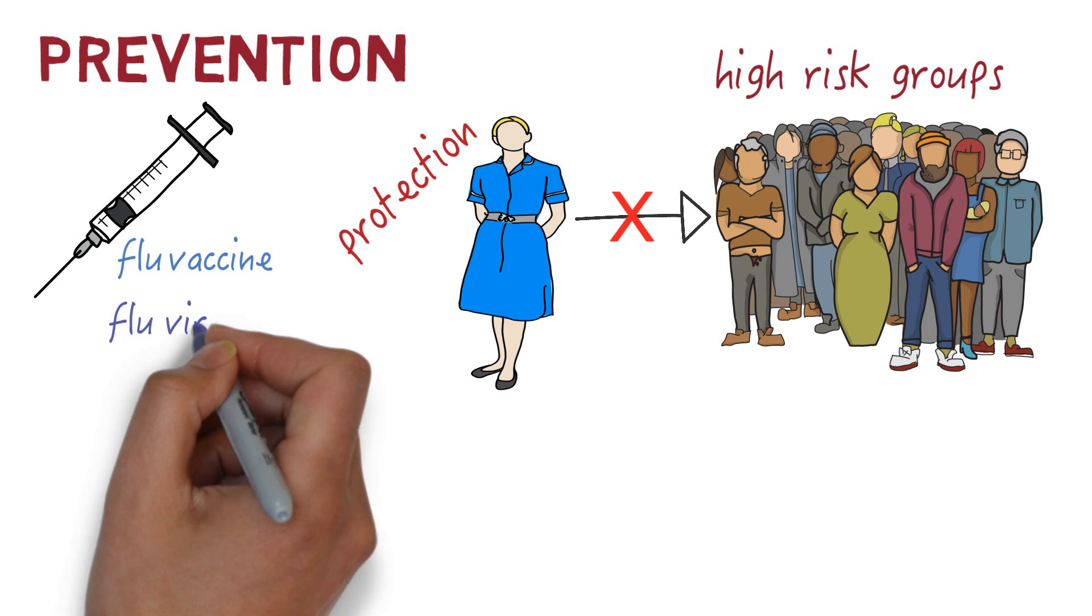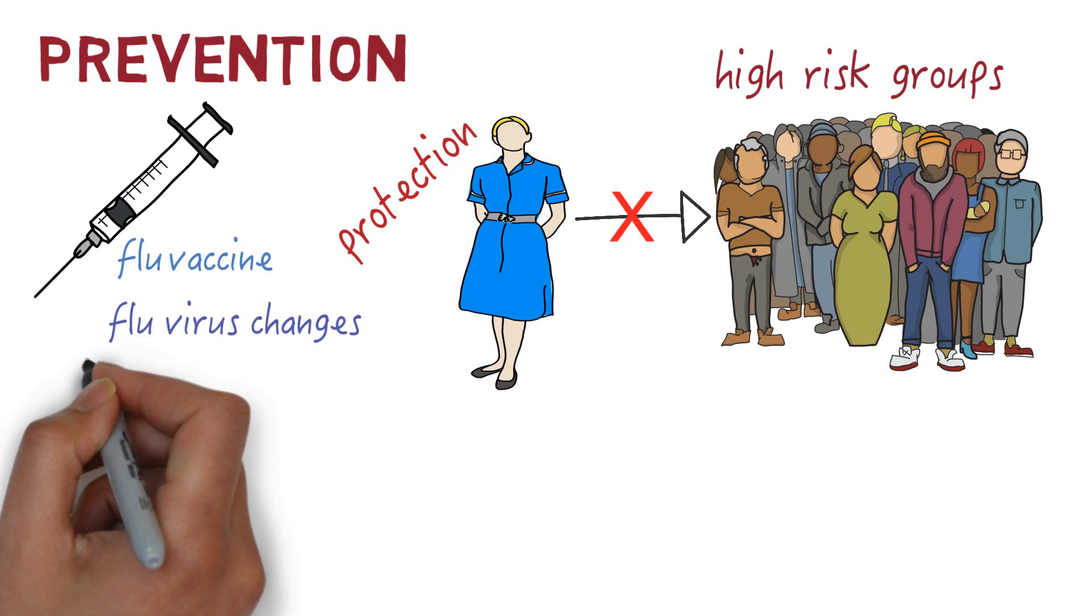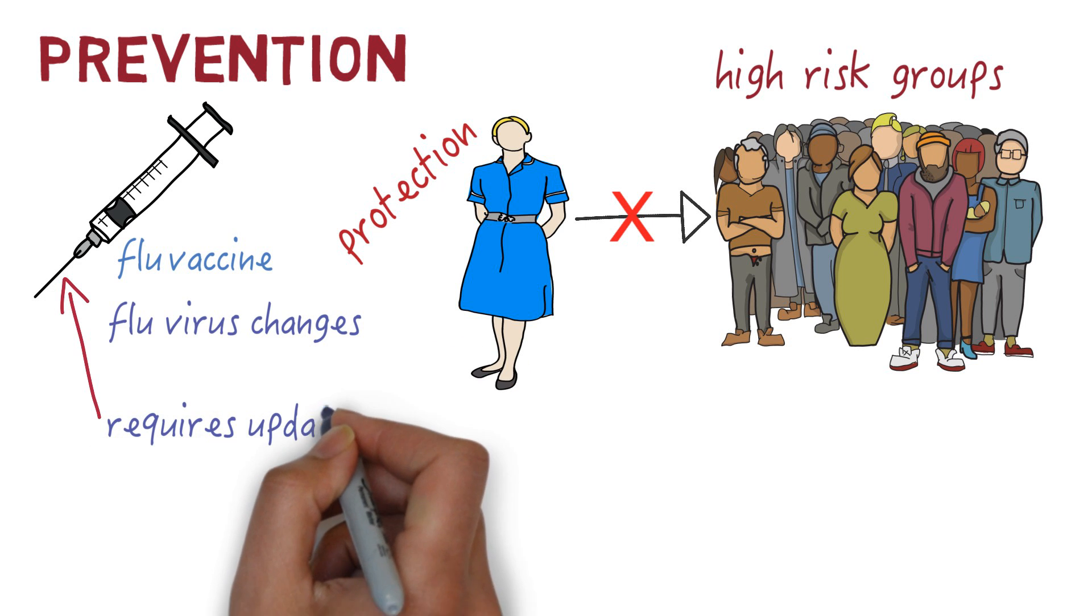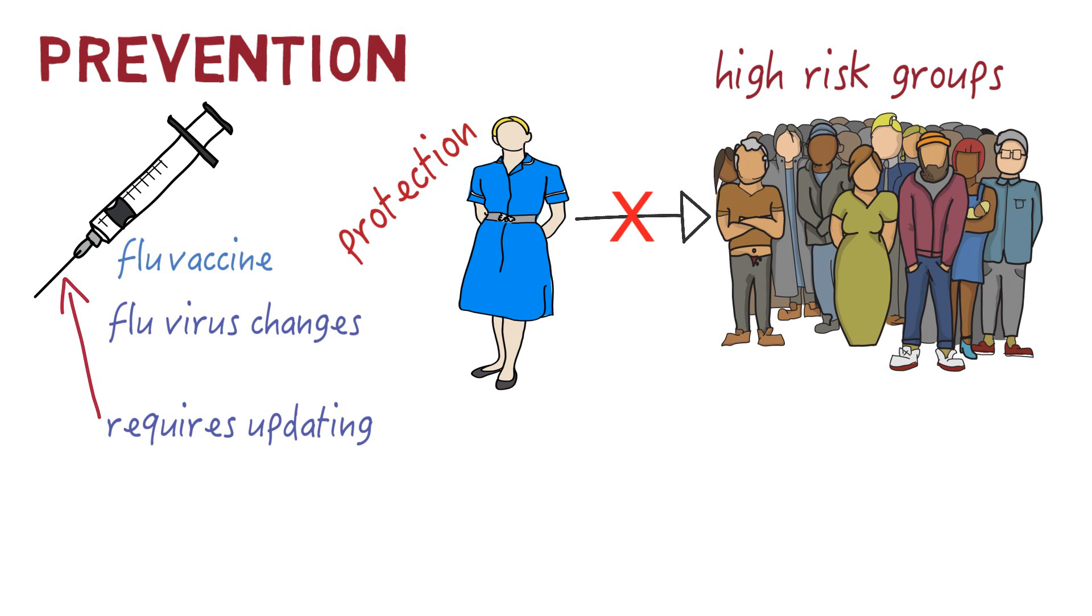The flu virus changes all the time. Remember drifts? Because of this, new flu vaccines are made every year to match the circulating flu strains and annual vaccination is required. How well the vaccine works depends on how closely the vaccine matches the circulating strains and also the characteristics of the person being vaccinated, like age and health.